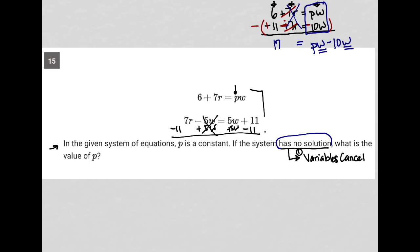W must also cancel. How would that happen? What value of P makes W cancel out? P must equal 10, because if P is 10, we have 10W - 10W and it's gone. That's how we know the answer is 10.